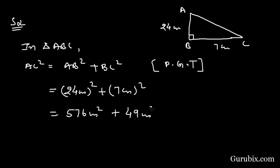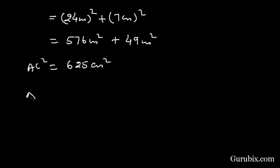Here we have 49 cm square. This equals 625 cm square. Here we have AC square, and this equals AC equals 25 cm. So AC is 25 cm.